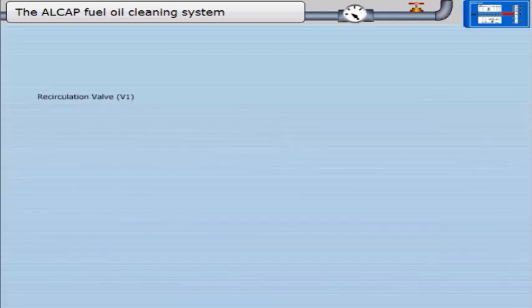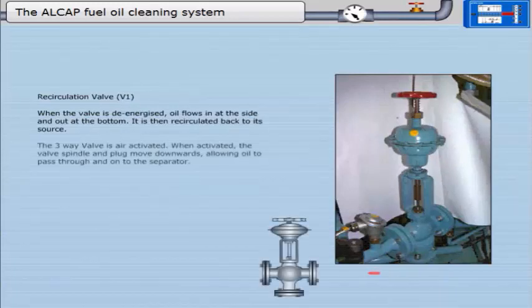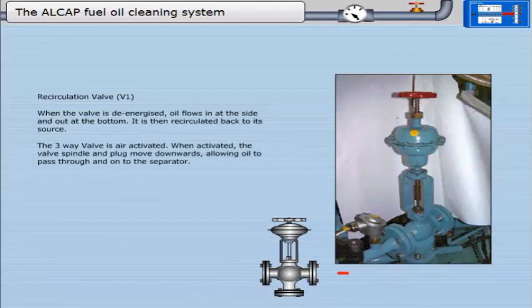Recirculation valve. When the valve is de-energized, oil flows in at the side and out at the bottom. It is then recirculated back to its source. The three-way valve is air-activated. When activated, the valve spindle and plug move downwards.